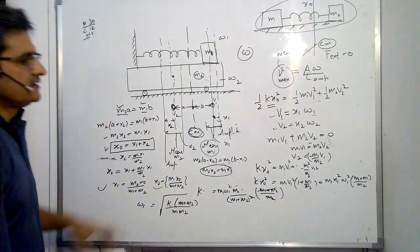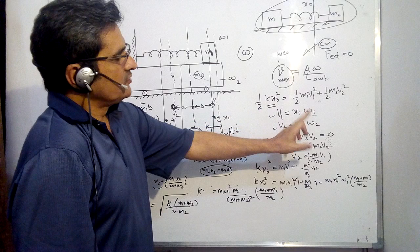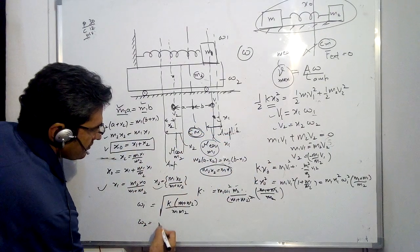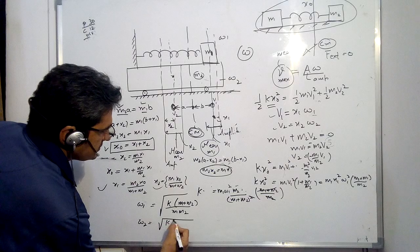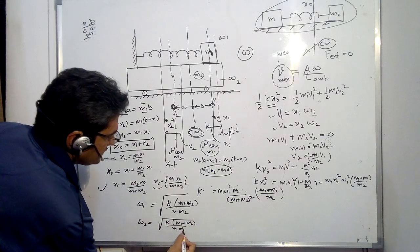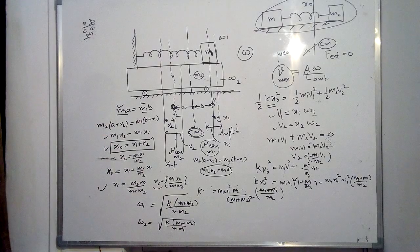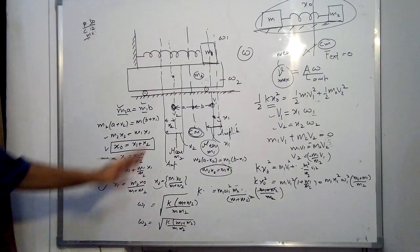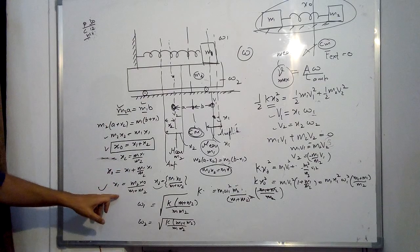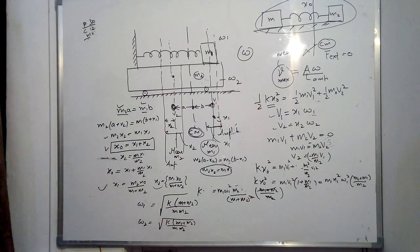Similarly, omega2 also comes out as √(k·(m1 + m2) / (m1·m2)). So the frequency of oscillation of both masses m1 and m2 is the same. The only difference is that their amplitudes of vibration — x1 and x2 — are different, as we found initially.